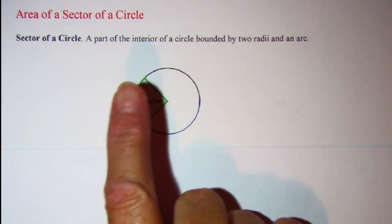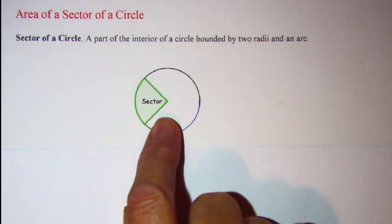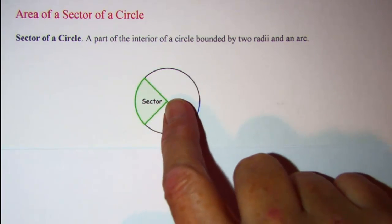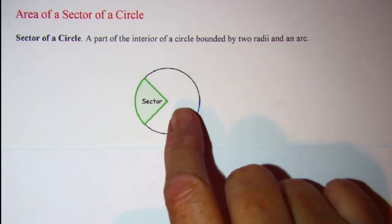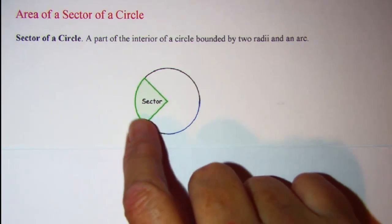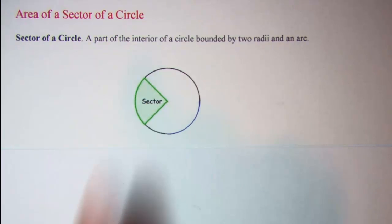The sector of a circle is a part of the interior of a circle bounded by two radii, this line segment and this line segment, and then an arc and this arc right here. So this little piece of pi is called a sector.